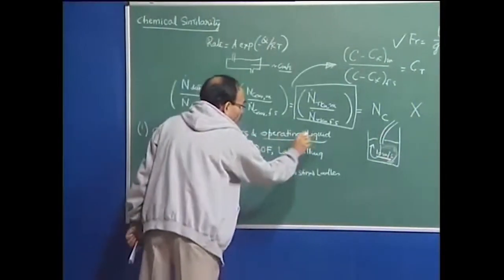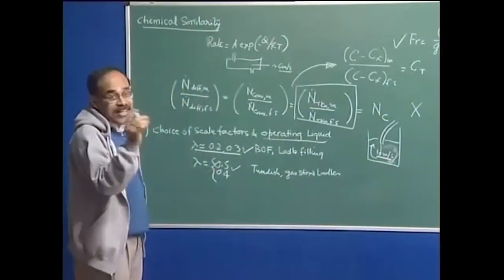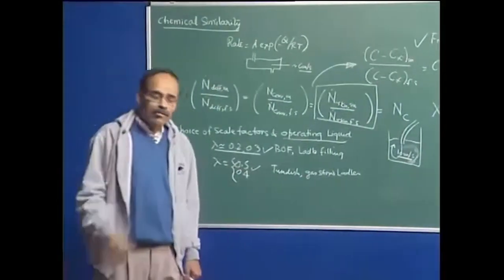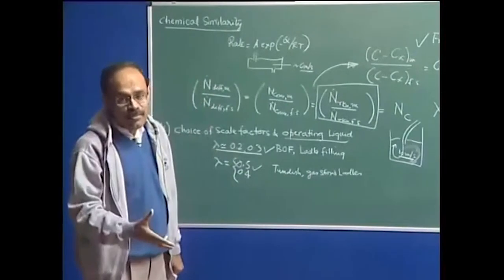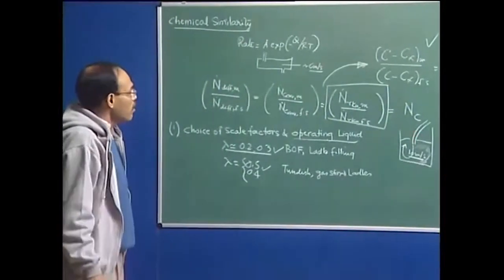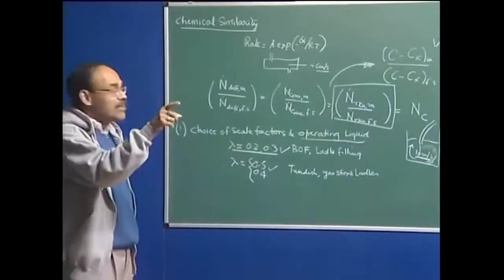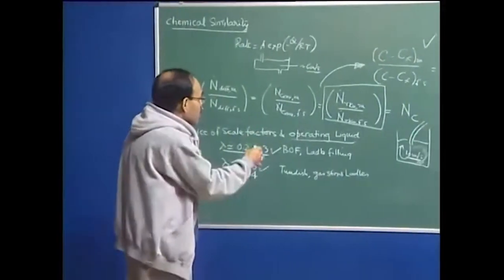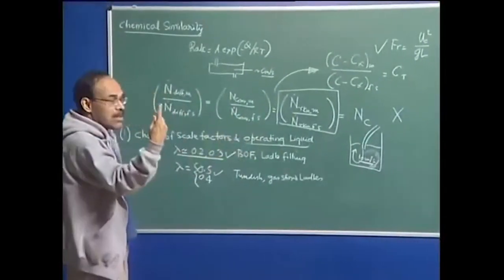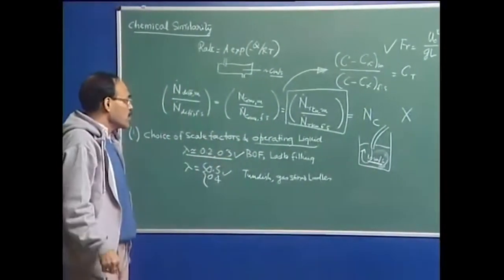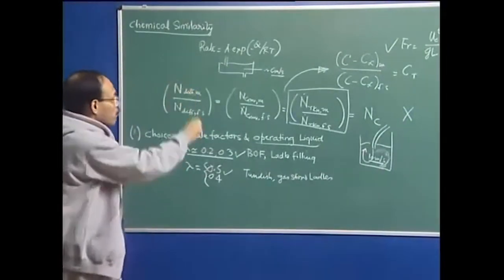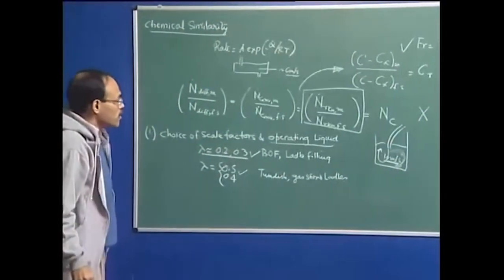We will like to use in most cases water as the representative liquid. When we say water, it is understood that we are talking about only one similarity number — the Froude number — which would govern the process, and invariably the choice would be in favor of the Froude number itself.